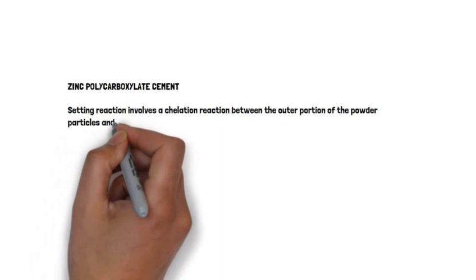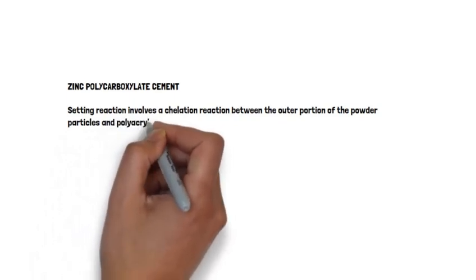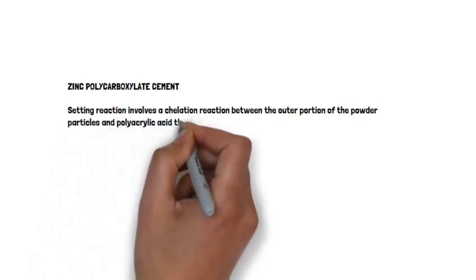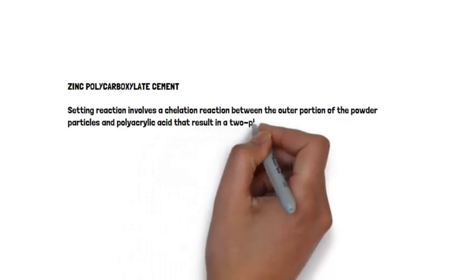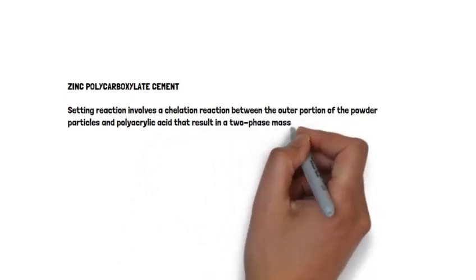The interrupted phase is composed of the unreacted portions of the powder particles and the continuous phase is a matrix gel composed of hydrated polyacrylate macromolecules which are cross-linked by the zinc ions.